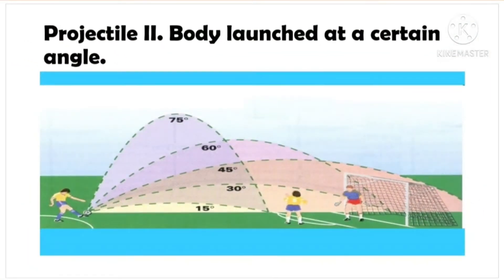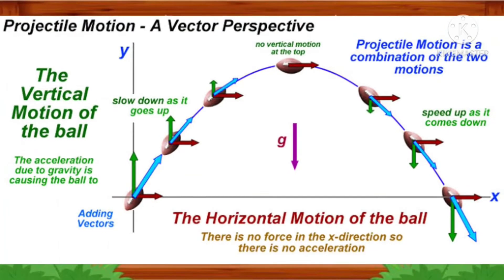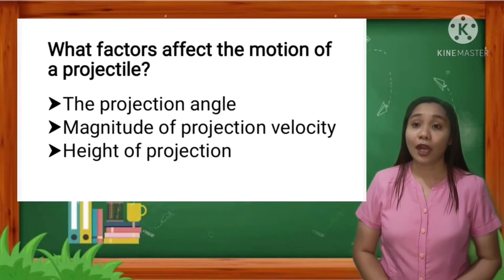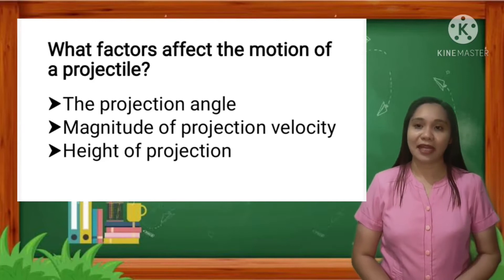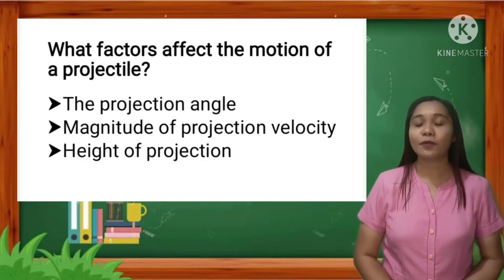A projectile launched at an angle has a constant horizontal velocity that moves in the same direction as the launch. The acceleration is zero. The upward-positive vertical velocity component decreases in magnitude until it becomes zero at the top of the trajectory, but because gravity makes it accelerate downward at 9.8 m/s², it will start to descend with increasing negative vertical velocity. As the projectile moves forward horizontally with uniform velocity, its vertical velocity is also accelerated, creating a trajectory that is a parabola. The main factors affecting trajectory are the projection angle, the magnitude of projection velocity, and height of projection.